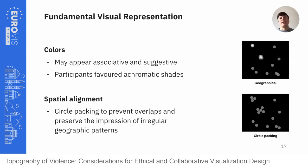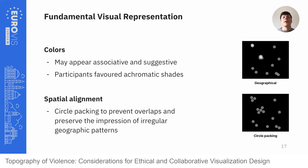Another important visual variable to consider is color. Colors can have an associative effect even when not directly linked to a specific symbolic meaning. During the co-design workshop, all participants consistently expressed that some colors had a suggestive impact or led to unintended and unsuitable associations. We therefore limited the visualization's color use to achromatic colors only. It is also important to think about spatial alignment of dense features in cartographic visualizations. To prevent overlaps and preserve the impression of irregular geographic patterns, we used the circle packing algorithm.